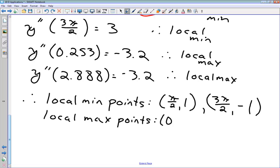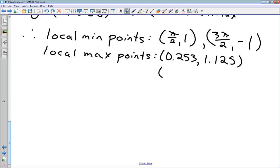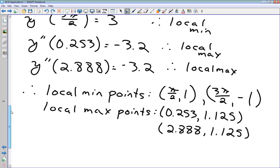Our x values here are these decimals, 0.253, and 1.125, and we have got another one at 2.888, 1.125, as well. So we've got each of our four critical points with the value associated with each, so we've identified our local minimum points and our local maximum points.